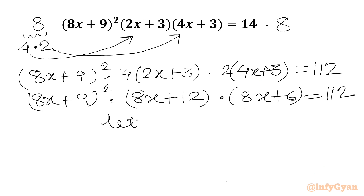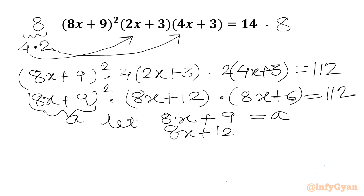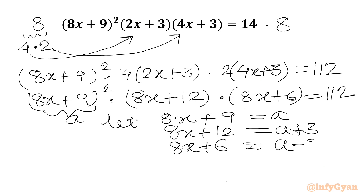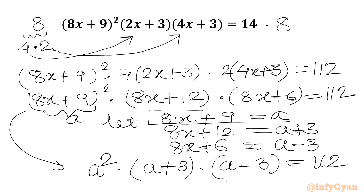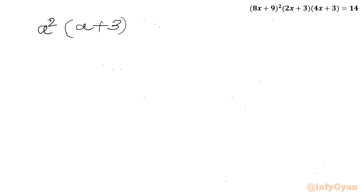Now let us assume 8x + 9 equal to a. So I can write 8x + 12 will be a + 3, and 8x + 6 will be a − 3. So our quartic will convert into a² times (a + 3) times (a − 3) equal to 112. Remember our substitution is 8x + 9 equal to a.